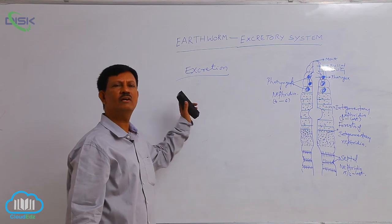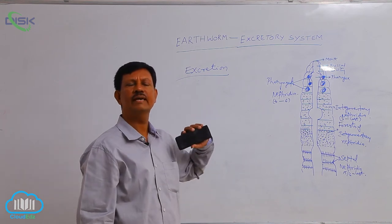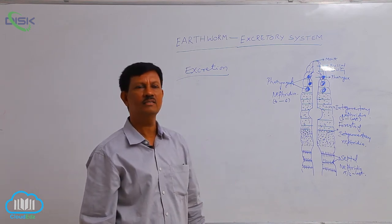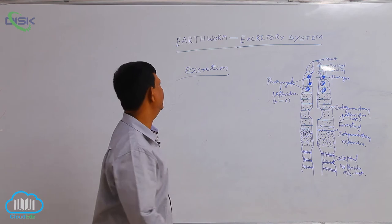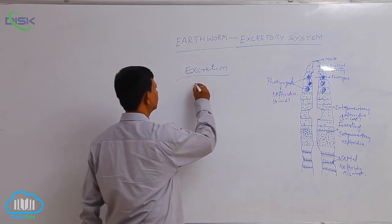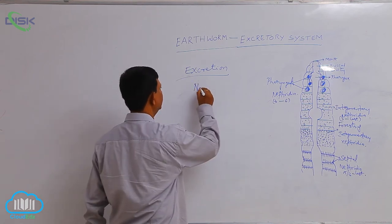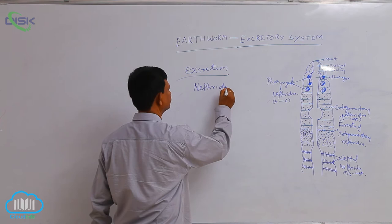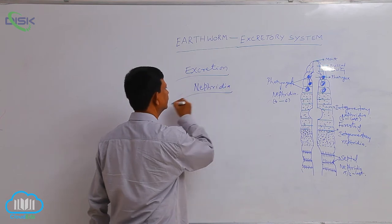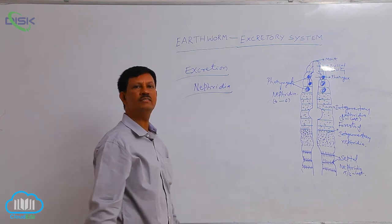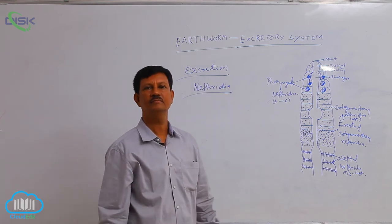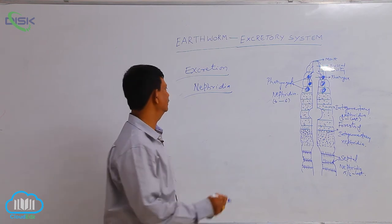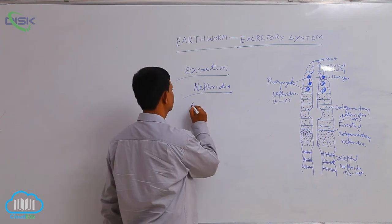There are different types of excretory organs present in animals. In earthworm, the main excretory organs are nephridia. They are coiled structures. There are three types of nephridia present in earthworm.